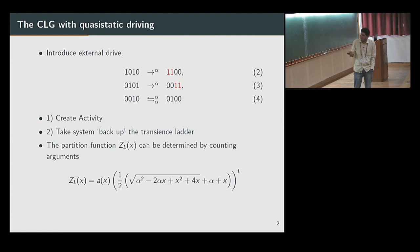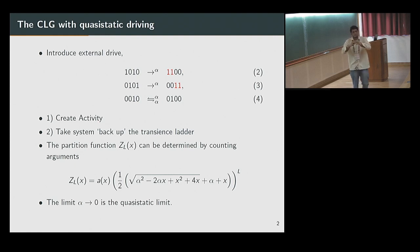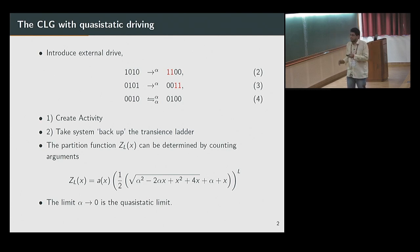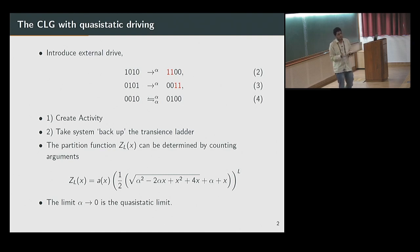So this is the partition function, which can be determined by counting arguments. When you take the limit alpha going to zero, you reach the quasi-static limit — you're quasi-statically driving the system. If you start in the active state and take this limit, you reach the normal active state. If you're below rho_c and take this limit, you get a measure on the absorbing states — only the lowest rung of the transient ladder, which are all absorbing states, contributes to the partition function. You get a certain measure on the absorbing states.